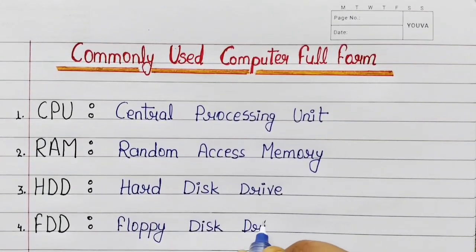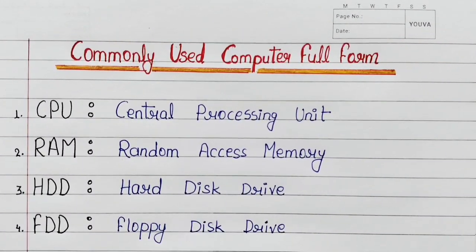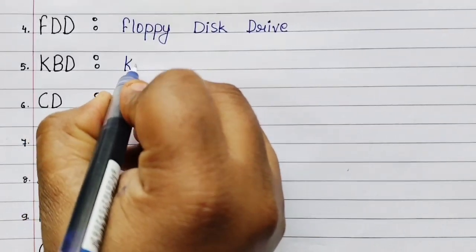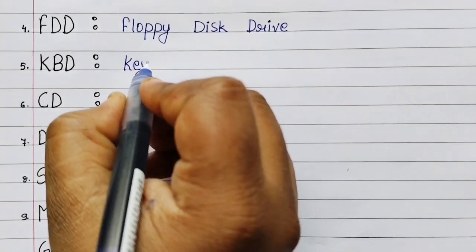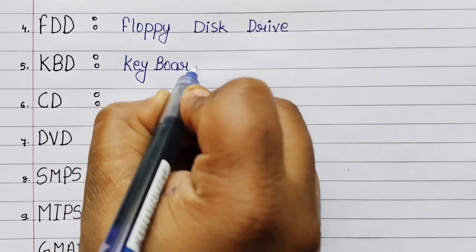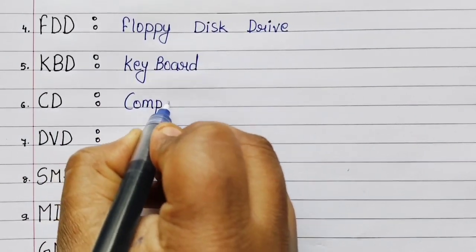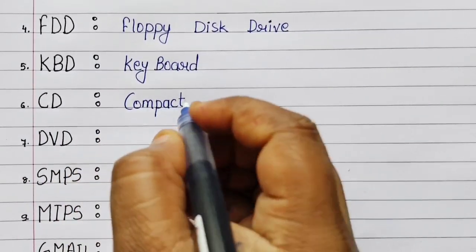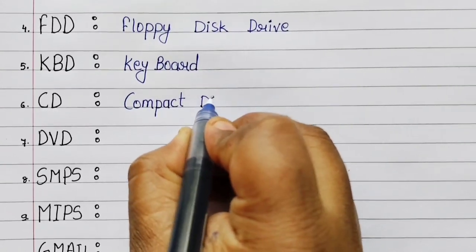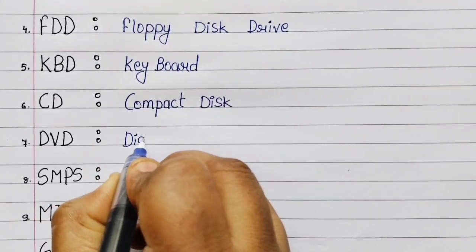Number 4: FDD - Floppy Disk Drive. Number 5: KBD - Keyboard. Number 6: CD - Compact Disk.